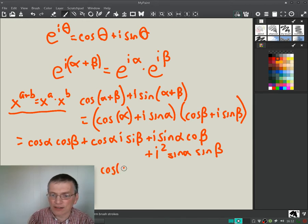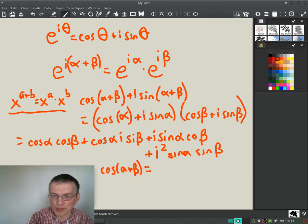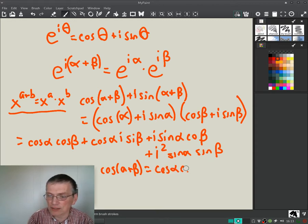So this turns into the real part on the left side is cosine of alpha plus beta equals... there are four terms here. Two of them are real. These have i's in them. The i squared turns into minus one. So we have cosine alpha cosine beta minus sine alpha sine beta.